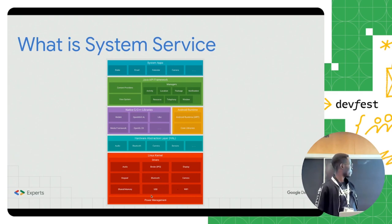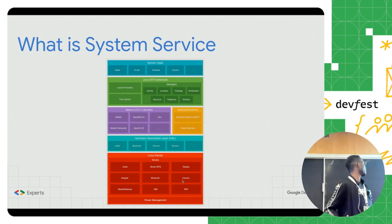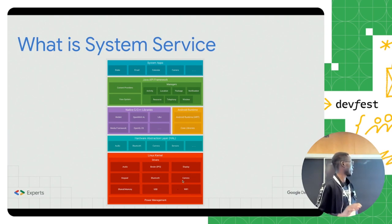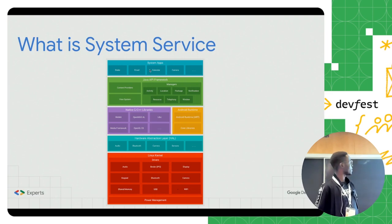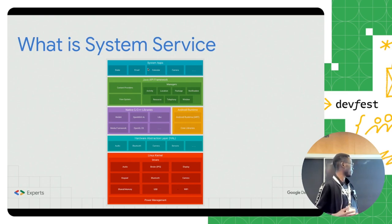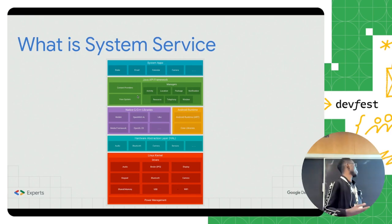The bottom layer has kernel-related things like audio, display, camera, and all the hardware-related stuff. Moving higher, we see another layer, and on the top is the system layer where you can find the default applications we have on our mobile phone. The green layer is the Java API framework, which provides features to the applications we build as Android developers.